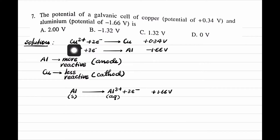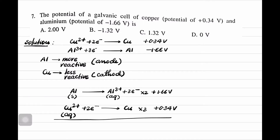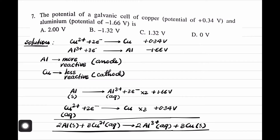Copper undergoes reduction: Cu²⁺ + 2e⁻ → Cu, and that value is +0.34 volt. To write the net cell reaction, we multiply the aluminium half-reaction by 2 and the copper half-reaction by 3 to cancel out electrons, then add them. The overall reaction is: 2Al(s) + 3Cu²⁺(aq) → 2Al³⁺(aq) + 3Cu(s). The E°cell is 1.66 + 0.34 = 2.00 volt.